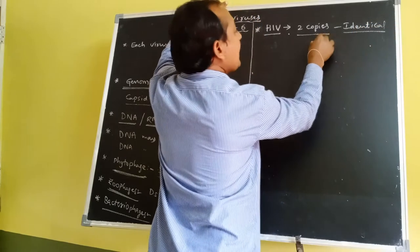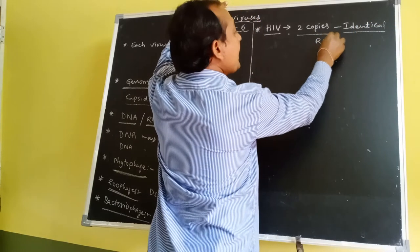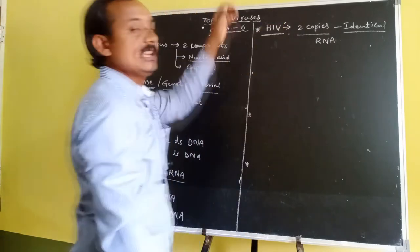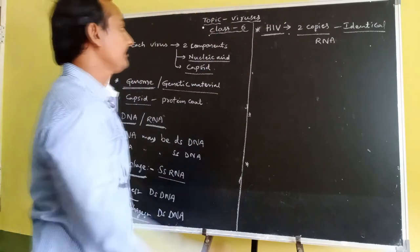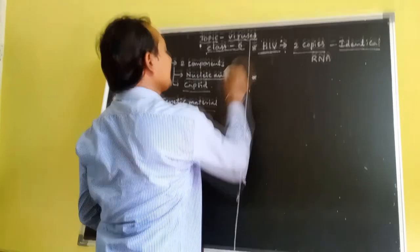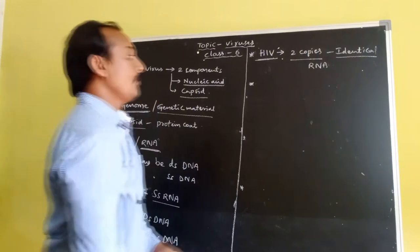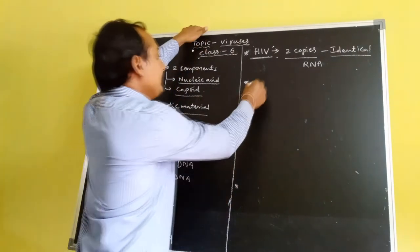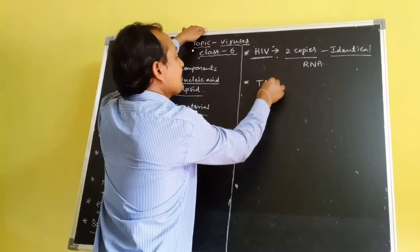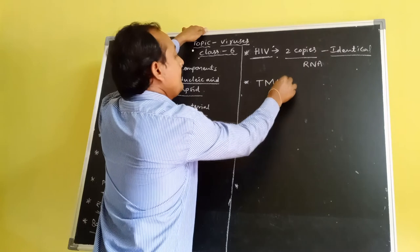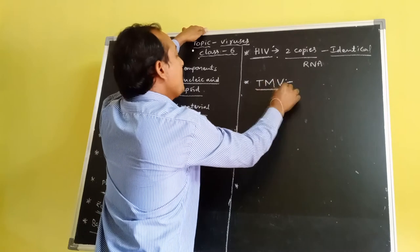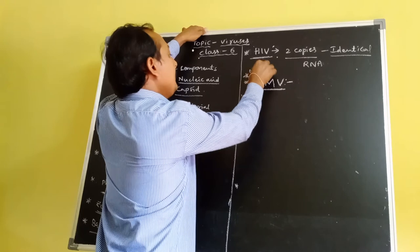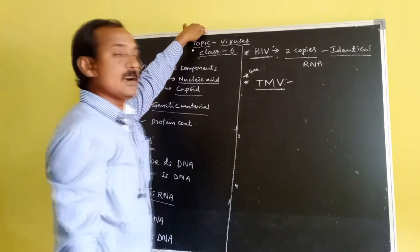Two identical copies of RNA molecules are present in HIV. Next, a very important four-mark question: describe the structure of Tobacco Mosaic Virus (TMV).